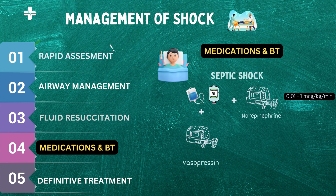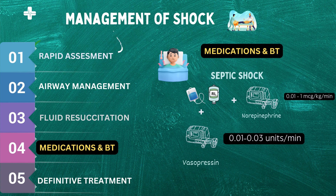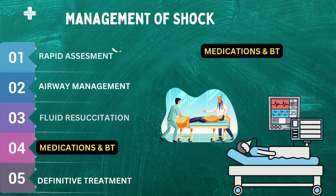Another medication used in septic shock is vasopressin, a hormone that regulates blood pressure and water balance in the body. In shock patients, vasopressin is used as a vasopressor to constrict blood vessels and increase blood pressure. The recommended dosing for vasopressin is 0.01 to 0.03 units per minute, with the dose adjusted based on the patient's response. Healthcare professionals will monitor the patient's vital signs, laboratory values, and cardiac function to ensure proper medication dosing and administration.